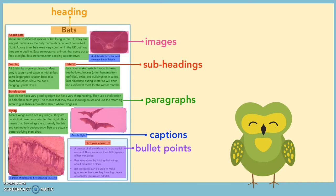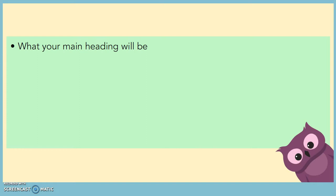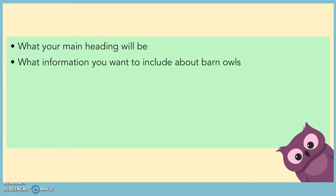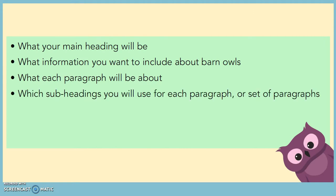Now let's think about the things you're going to include within your plan. You're going to write down what your main heading is going to be — think about how you can summarise as quickly as possible what your report is actually about. You're going to think about the information you want to include about barn owls, which might mean going back to yesterday's work and adding extra information. You're also going to think about what each paragraph is about so you can group that information together in chunks, and what subheadings you can use to allow the reader to understand what each section will cover.